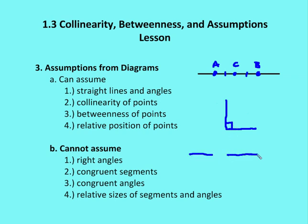Now, even though segments might look congruent, it doesn't mean necessarily that they are congruent. Same with angles. Even though angles might look congruent, it doesn't necessarily mean that they are congruent. And you can't assume that the relative sizes of segments and angles are anything or any measure other than what's given.